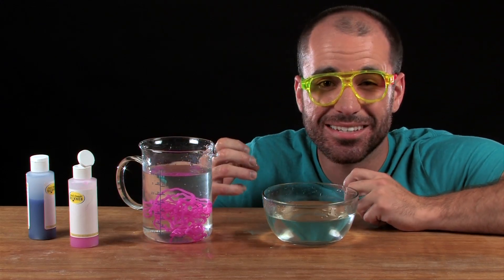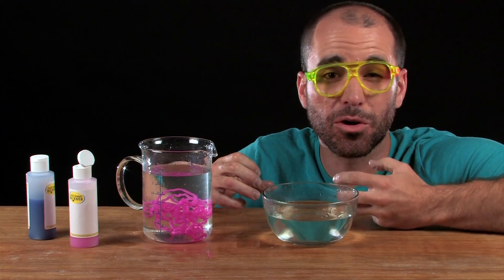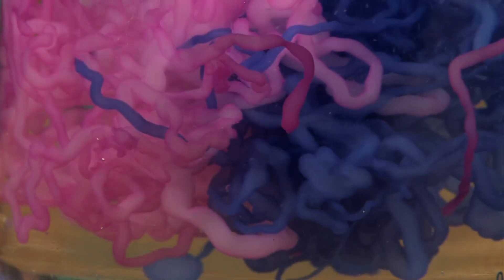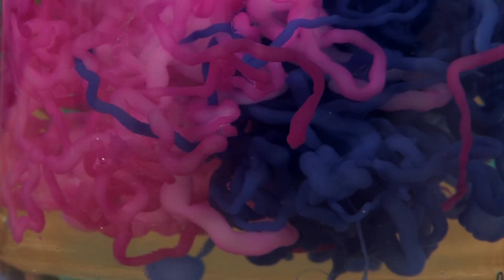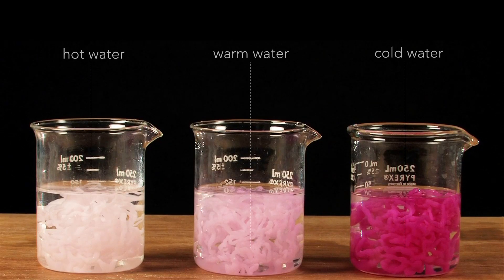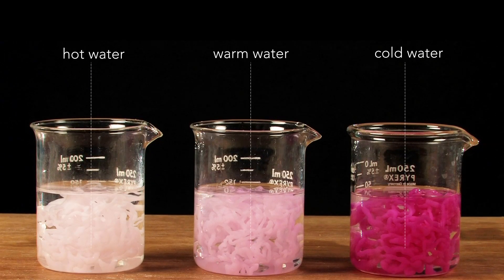And what's happening here is the heat-sensitive insta-worms contain a special thermochromic dye. Thermochromic means that a color change occurs in accordance with temperature. So you could easily turn heat-sensitive insta-worms into a science fair project.